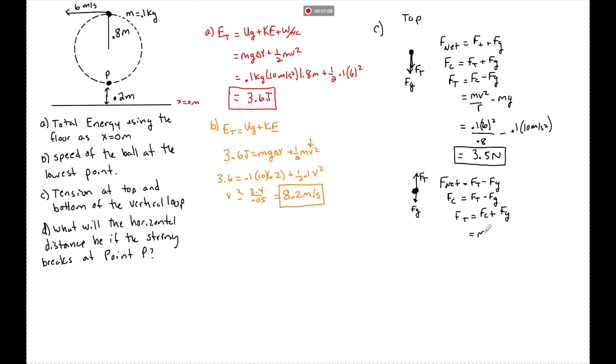I'm going to substitute in, once again, MV squared over R plus Mg, which is now equal to 0.1. Now, this is the speed at the bottom. Okay,